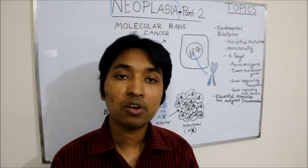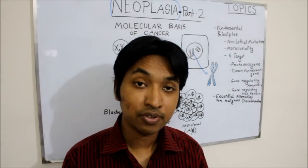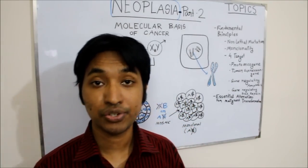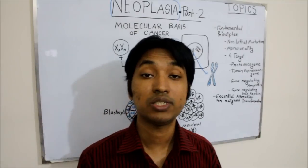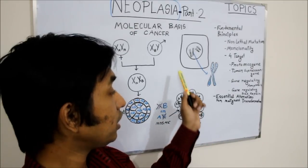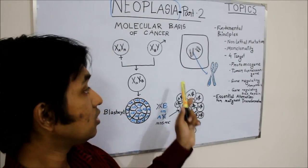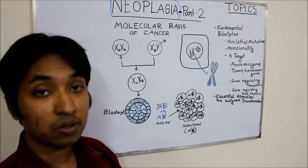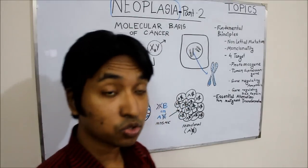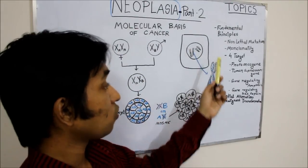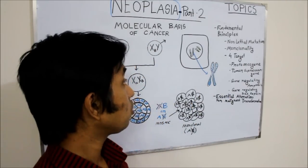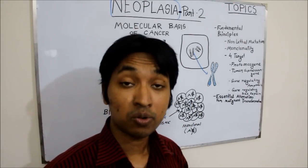This is a very important line from your textbook — mark that line well. Non-lethal mutation lies at the heart of carcinogenesis. To understand non-lethal mutation first we have to know what is mutation, and to understand mutation first we have to know what is gene. I have drawn a simple image as you can see. This is a cell. A cell has a cytoplasm and a nucleus.